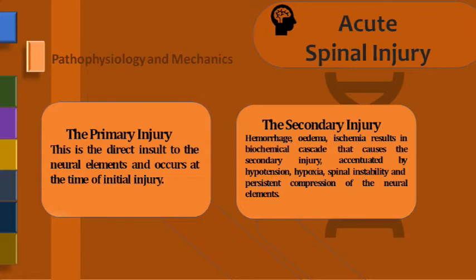How does injury actually happen? There are two mechanisms: primary injury and secondary injury. Primary injury results from direct insult to the neural elements and occurs at the time of initial injury. We cannot do anything about primary injury because if it happened, it happened — you cannot change it. But we can definitely make a difference with secondary injury, which happens because of hemorrhage, edema, ischemia, hypotension, hypoxia, and spinal instability. If we take proper care, we can prevent secondary injury but not primary injury.